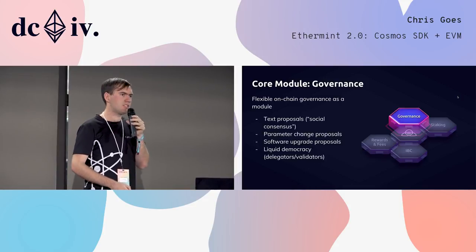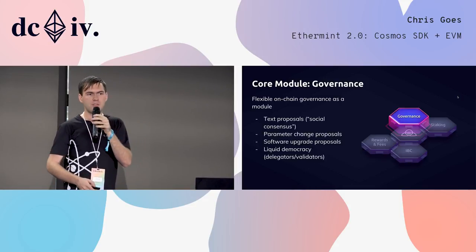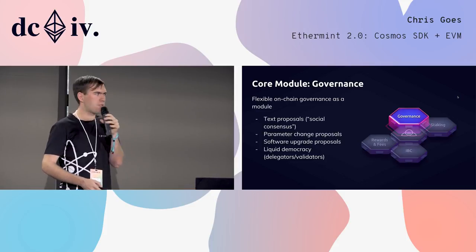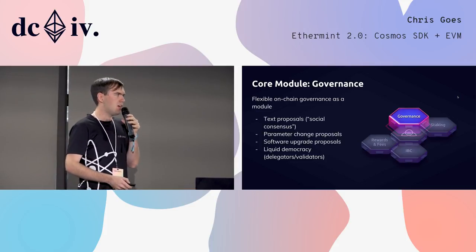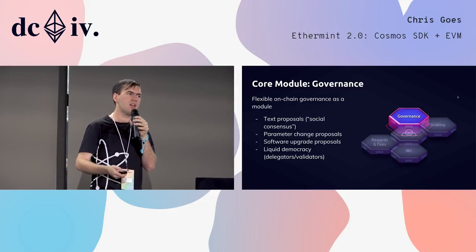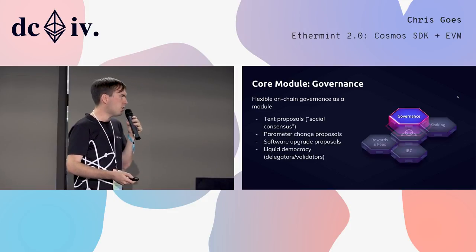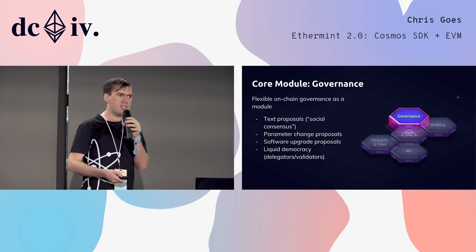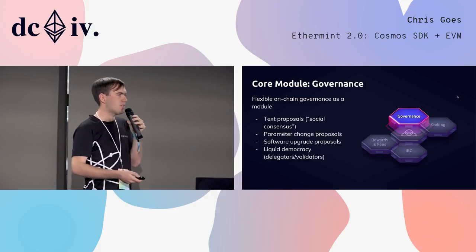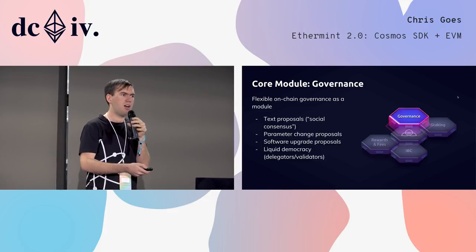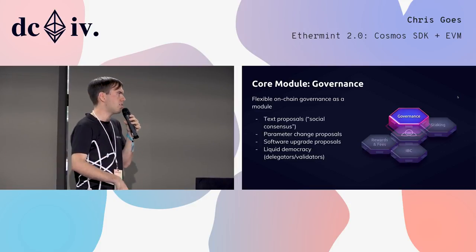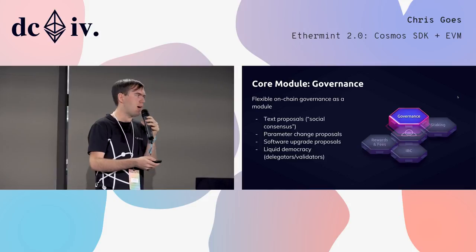The second core module is governance. Like our proof-of-stake module, governance is designed to be pretty flexible, so it will work for lots of different blockchains. Our governance module has different kinds of governance proposals — proposals to change some way the chain works. The first are text proposals. They don't do anything in-protocol in-band, but rather allow the network to come to social consensus on maybe some change to make in a future software upgrade, or on some way we want to change how we're operating this blockchain.